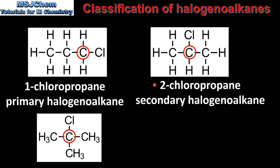Our next example is 2-chloropropane which is a secondary halogenoalkane. 2-chloropropane has a secondary carbon atom — it's the carbon atom bonded to the functional group and it's also bonded to two other carbon atoms.